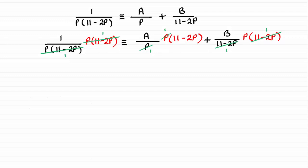And what that's going to leave me with is this. It's going to be 1 is identical to A times 11 minus 2P plus B times P, and you should really be able to go straight to that line from here.